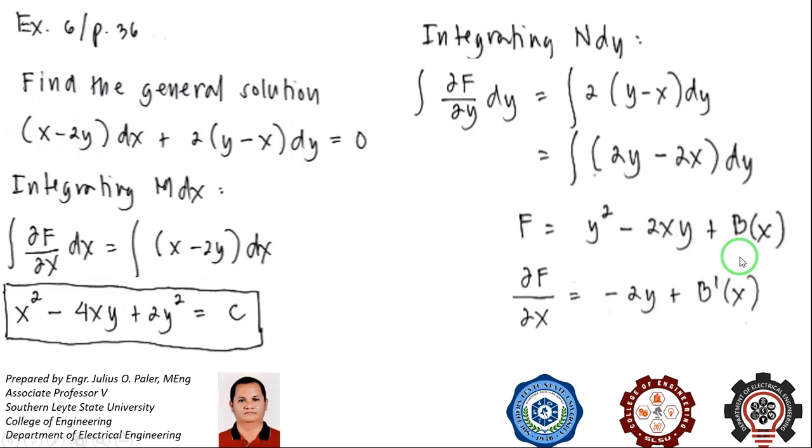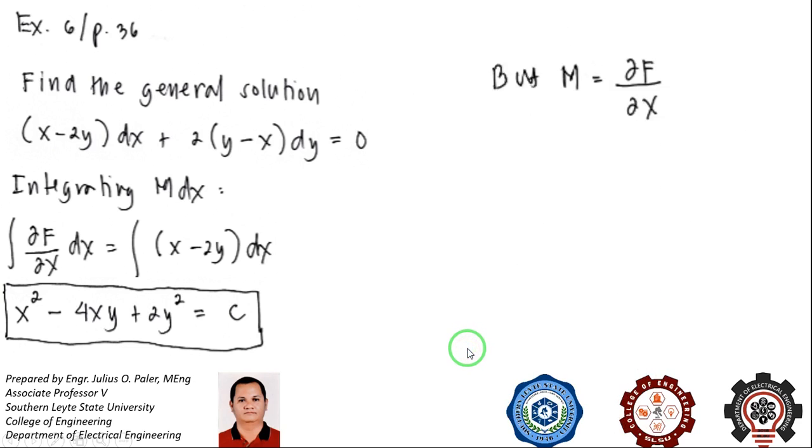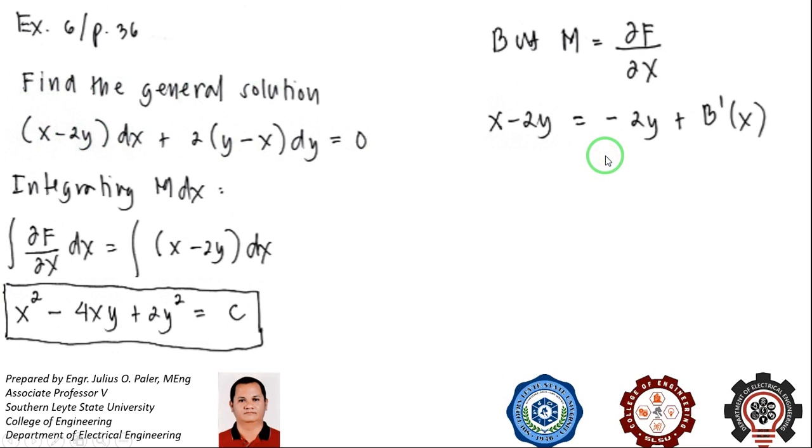It is actually similar to the previous solution. But M is the partial derivative of F with respect to X, so our M, which is this term, we can actually equate that to minus 2Y plus B prime of X.